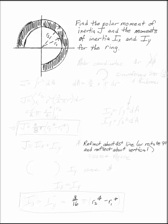Find the polar moment of inertia J and the moments of inertia IX and IY for the ring. You've already got polar moments of inertia and radiuses given, so the first thing you want to think of is you're going to need some polar coordinates.